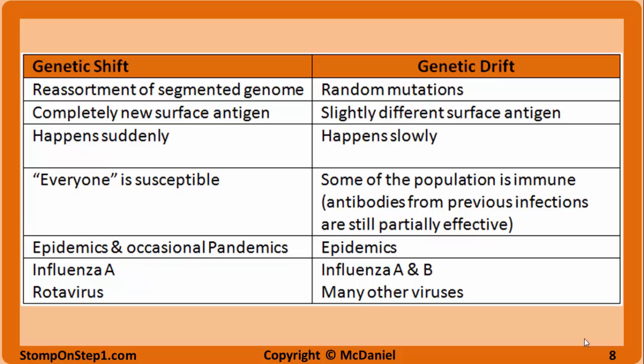Here is a table to summarize the difference between genetic drift and genetic shift. Shift is caused by reassortment of the segmented viral genome, often across multiple species. The change is sudden. It results in the virus gaining a completely new surface antigen, so nearly everyone is susceptible. It can lead to yearly epidemics or worldwide pandemics. It is present in influenza type A, which is the type of influenza present in multiple different species. Rotavirus, which also has a segmented genome, can have genetic shift too.